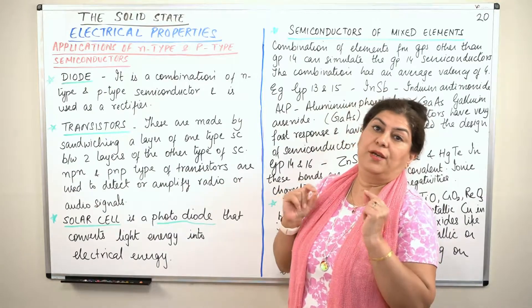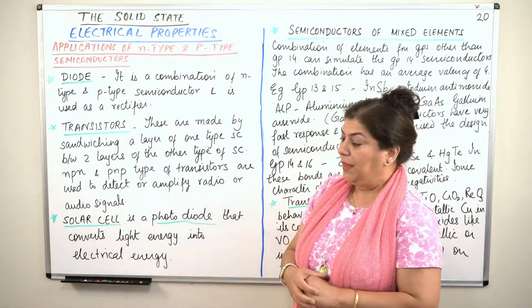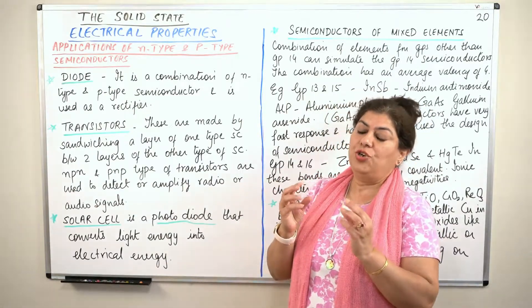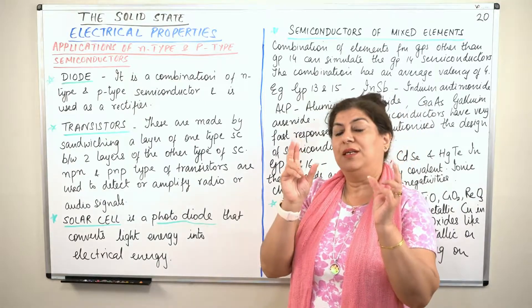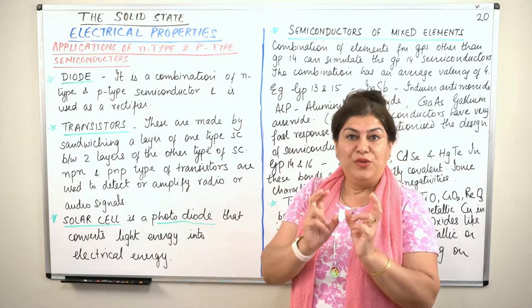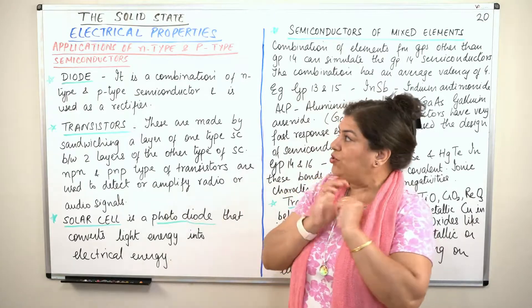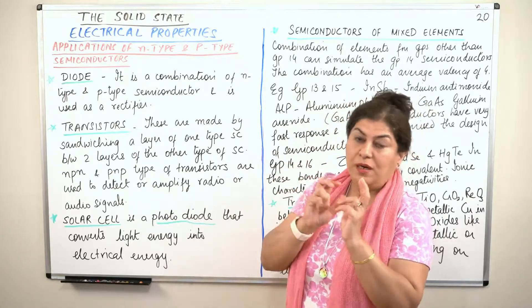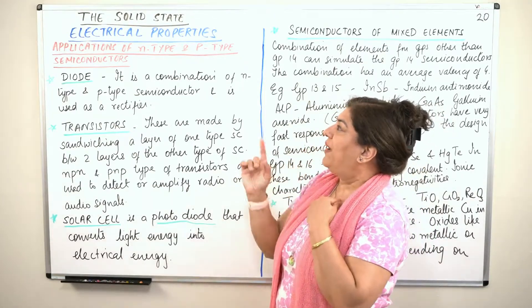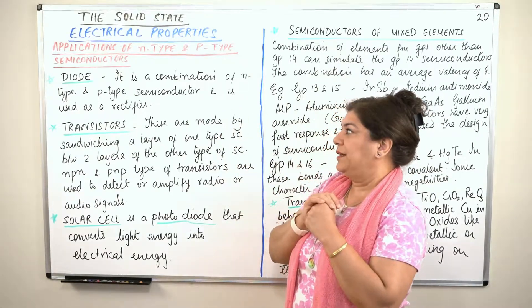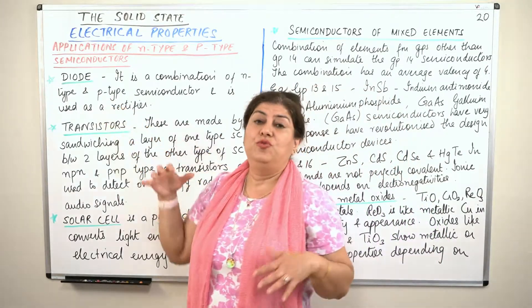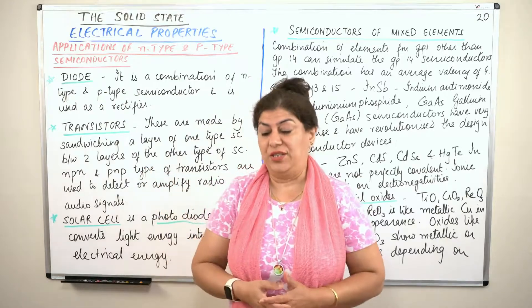The first application is the diode. A diode is made by the combination of an n-type of semiconductor and a p-type of semiconductor. They are joined together to form a diode, and a diode is used as a rectifier.